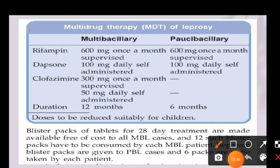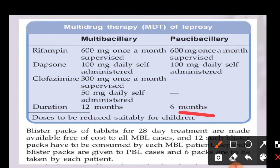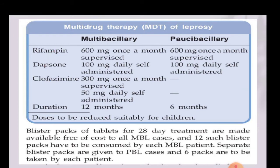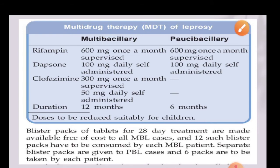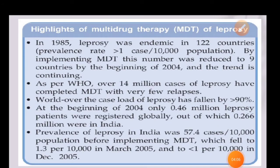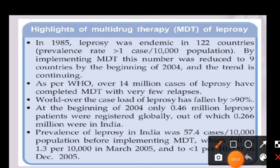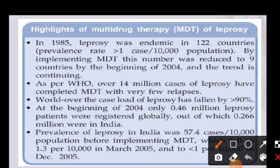The duration of multibacillary multi-drug therapy treatment is 12 months, while paucibacillary is treated for up to six months. These doses are for adults, and in the case of children the dose may be reduced suitably.